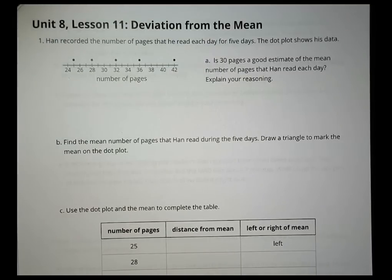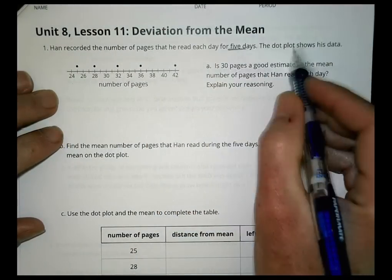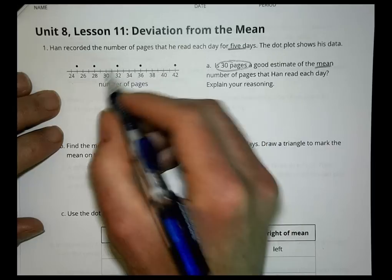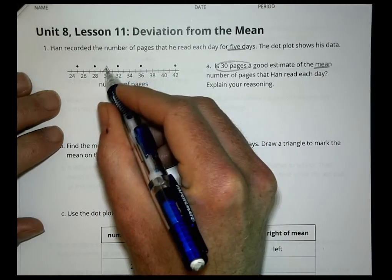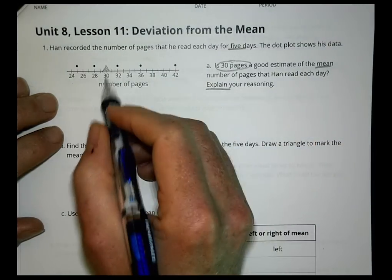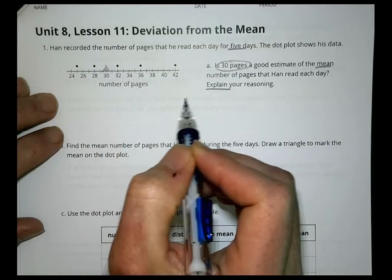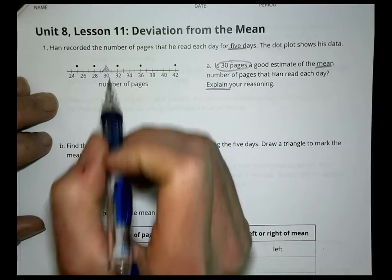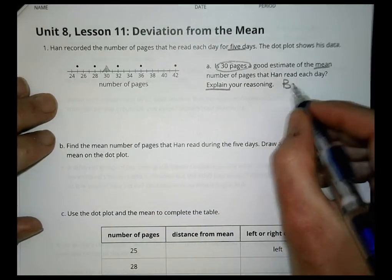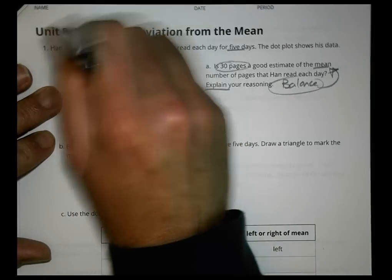Homework for Unit 8, Lesson 11, Deviation from the Mean. Problem 1: Han recorded the number of pages he read each day for 5 days, shown on a dot plot. Is 30 pages a good estimate of the mean? I would say no, because it's not really in the middle of the data — there are only two values to the left and three to the right, and one of them is quite large. When looking for the mean, you want balance, and 30 is probably too low.